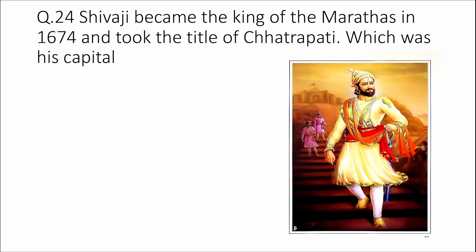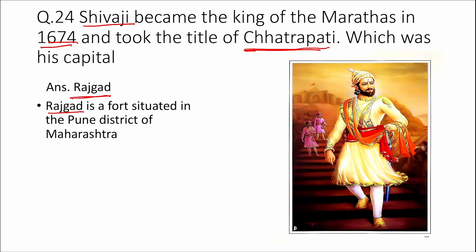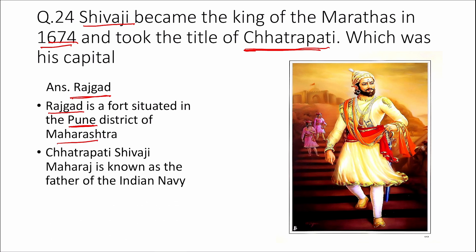Question 24: Shivaji became the king of Marathas in 1674 and took the title of Chhatrapati. He is known as the father of the Indian Navy. Which was his capital? Answer: Rajgad. Rajgad is a fort situated in the Pune district of Maharashtra.